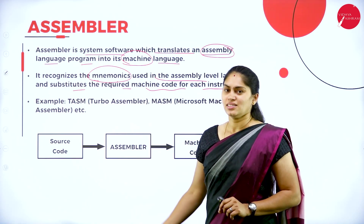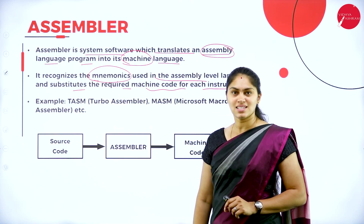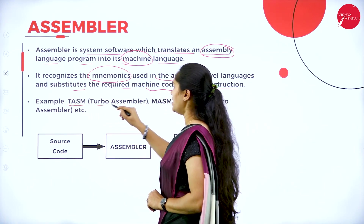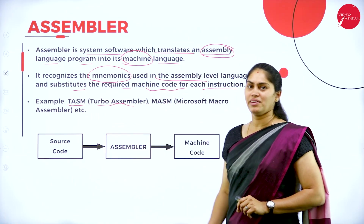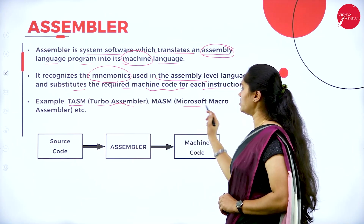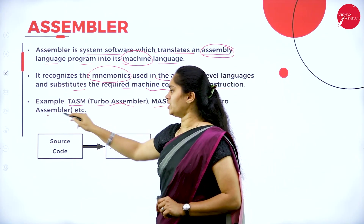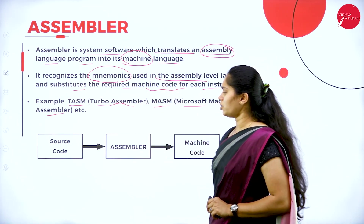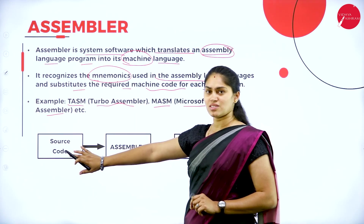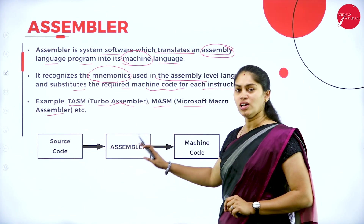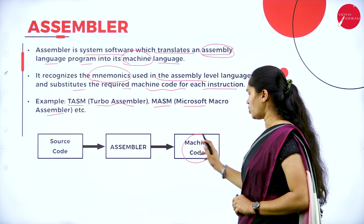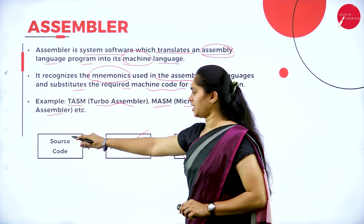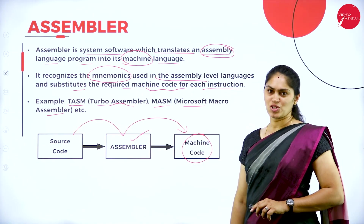Then the computer is able to understand what was written in the assembly level language. Examples of assemblers include TASM (Turbo Assembler) and MASM (Microsoft Macro Assembler). The source code written by the programmer is converted into object code or machine code with the help of the assembler.